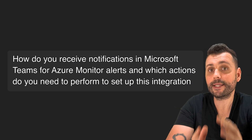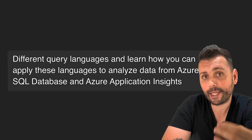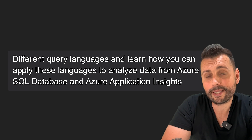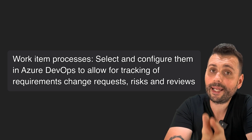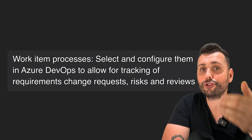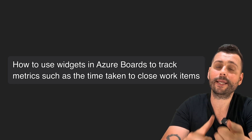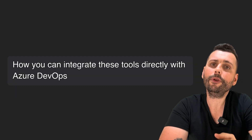Another topic you need to cover is query languages, processes, and tools. Learn different query languages and how to apply them to analyze data from Azure SQL Database and Azure Application Insights — you need to be good at writing monitoring queries. For work item processes, you need to be able to select and configure them in Azure DevOps to allow tracking of requirements, change requests, risks, and reviews. Learn how to use widgets in Azure Boards to track metrics like the time taken to close work items. Also learn about communication tools that support dev teams in different locations and how to integrate them directly with Azure DevOps.